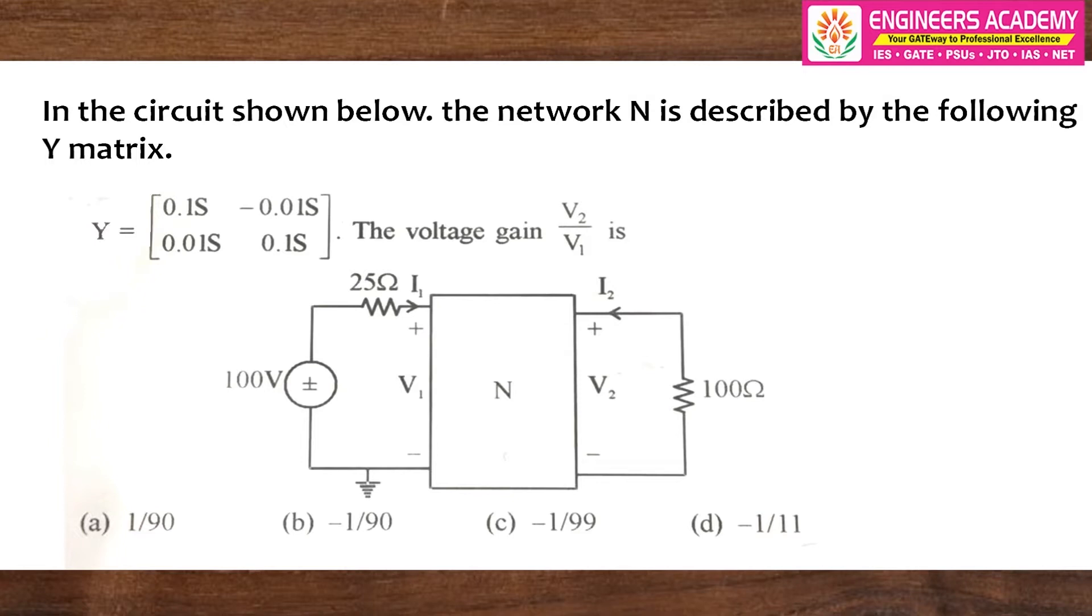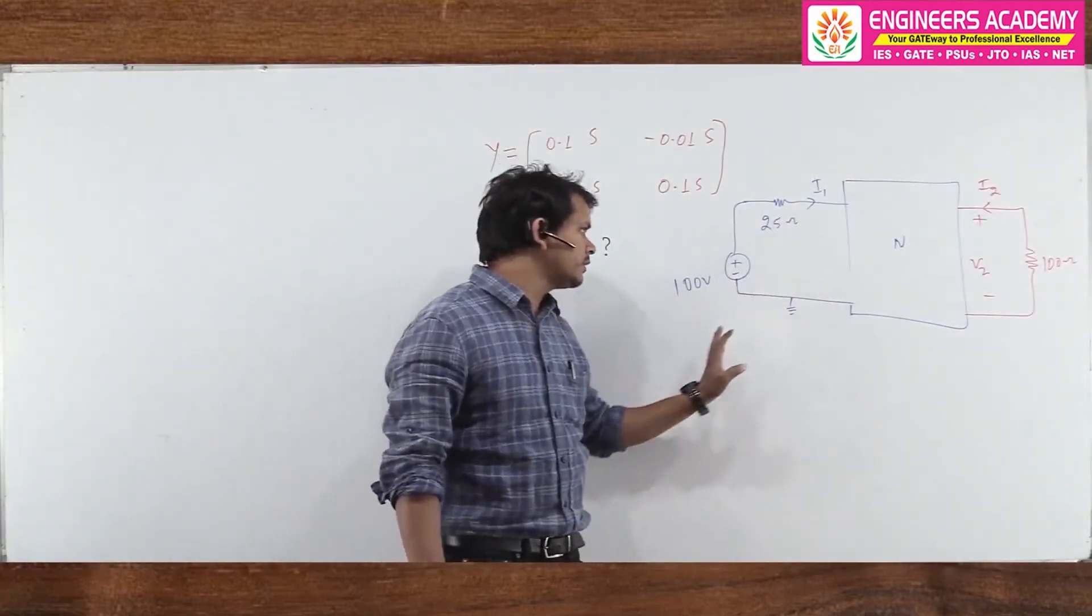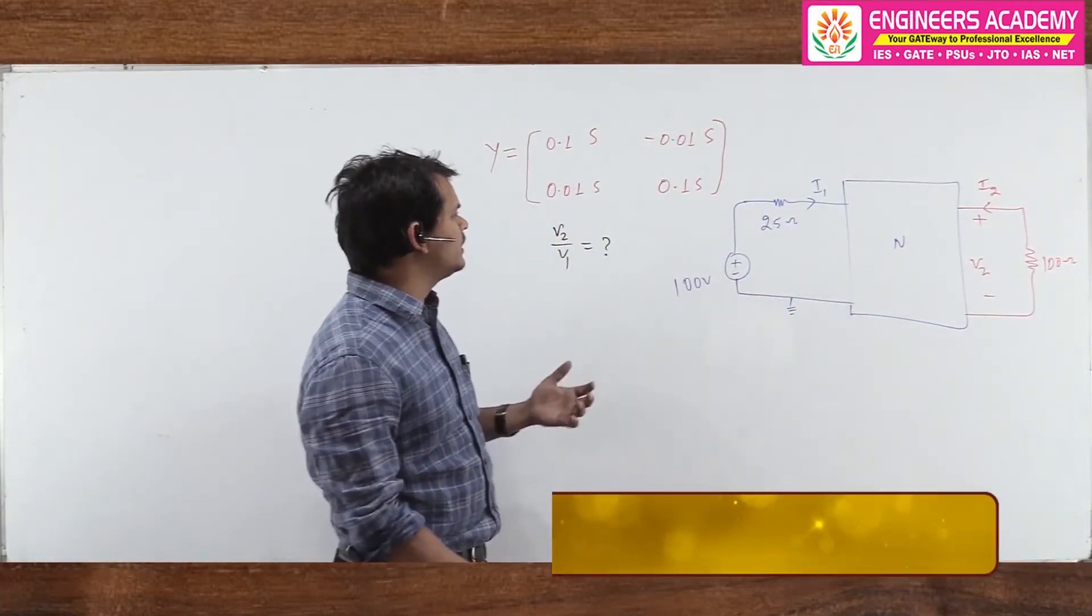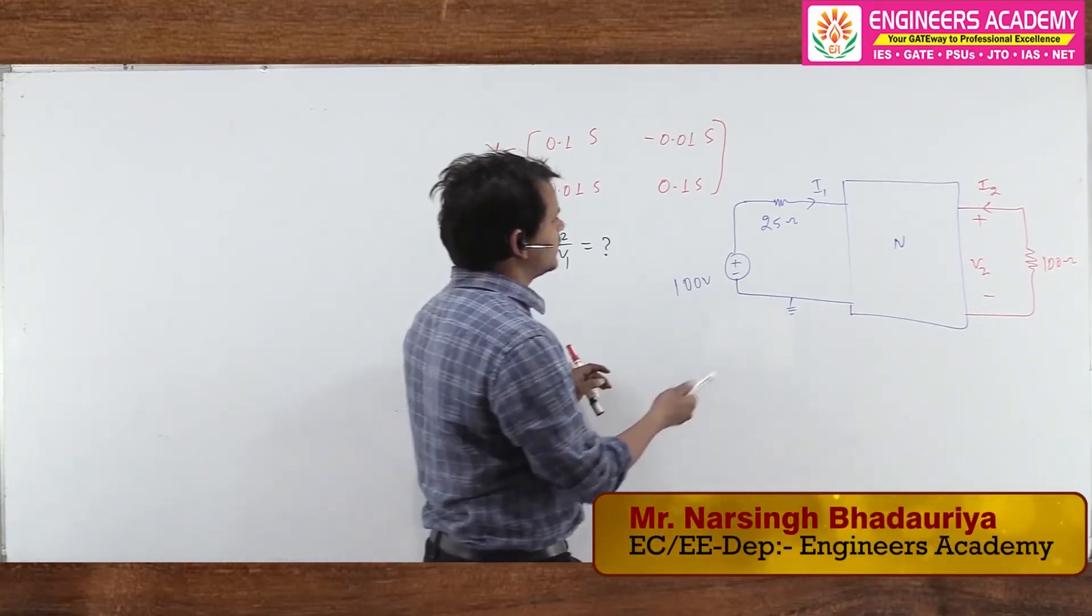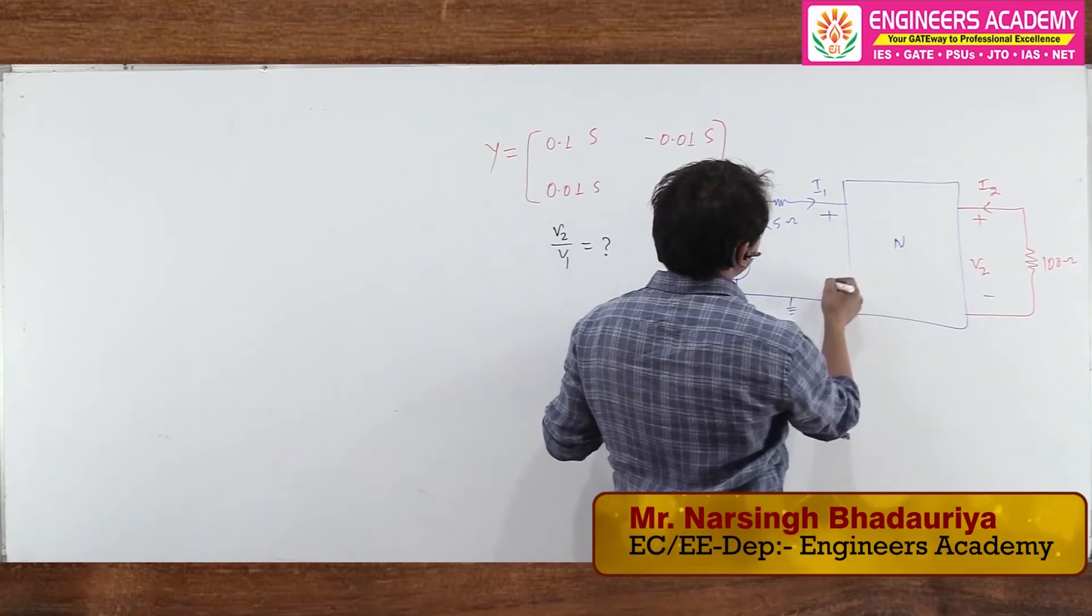The voltage gain V2 by V1 is what this question is asking. Basically we have to find V2 by V1. So let's see, this question is very simple. Now we see the solution of this question. We need to calculate V2 by V1. So here we have, this is V1.